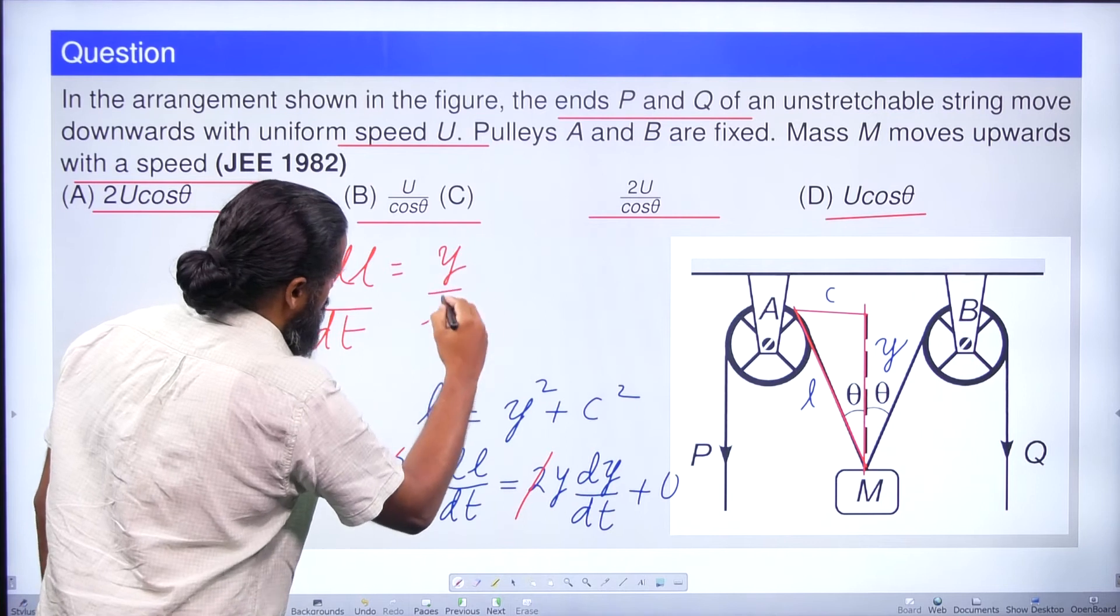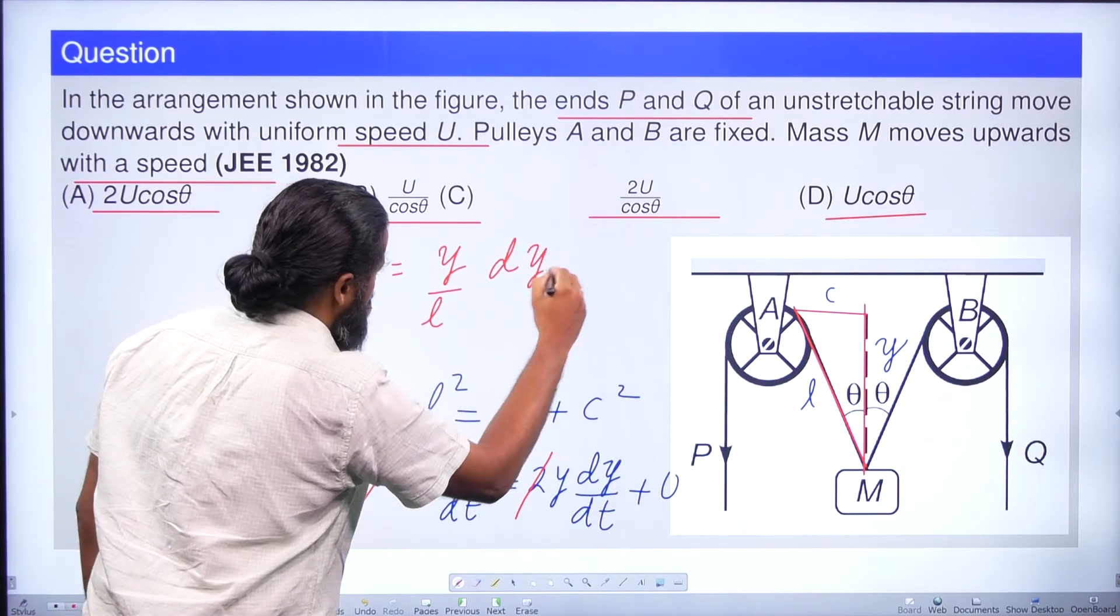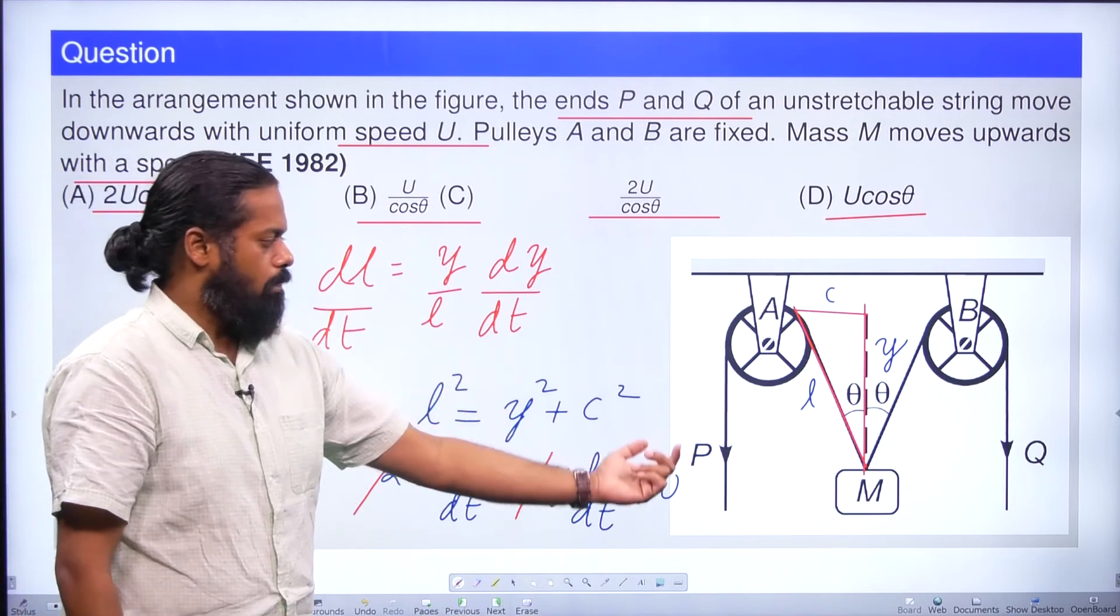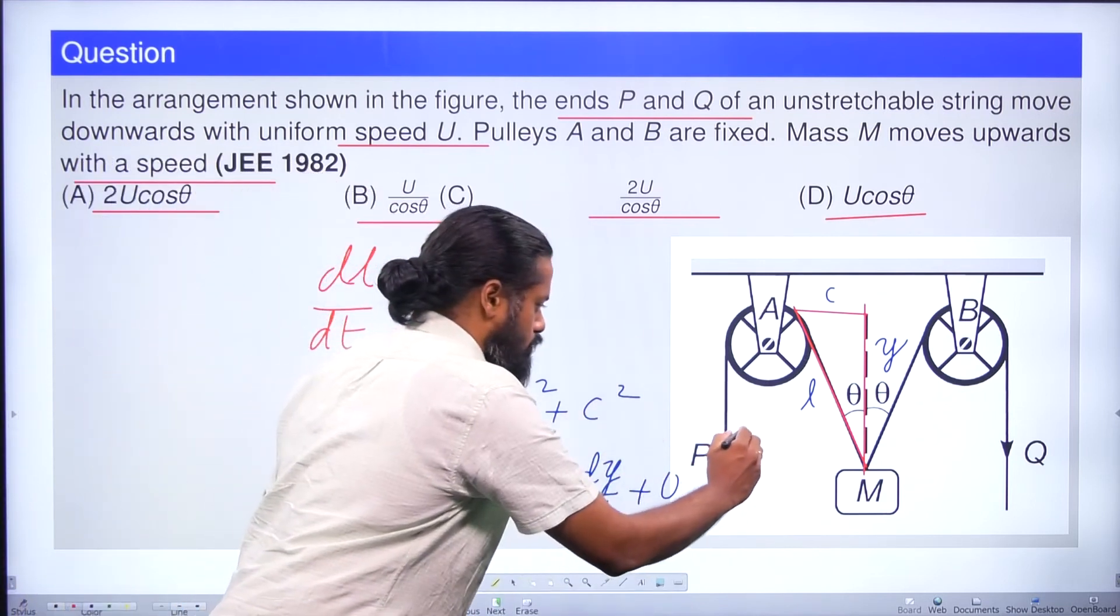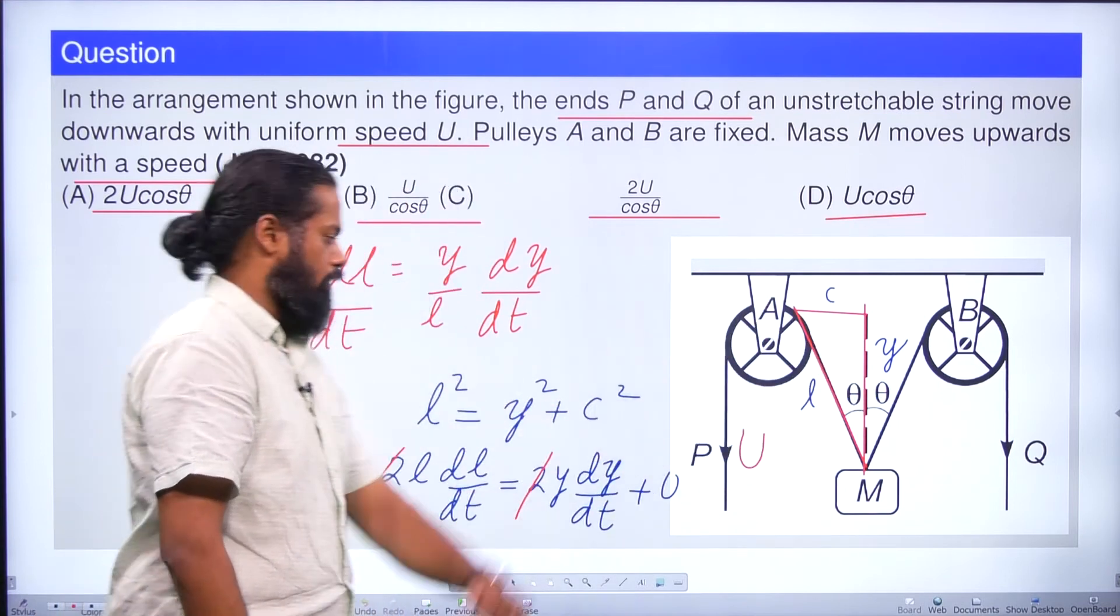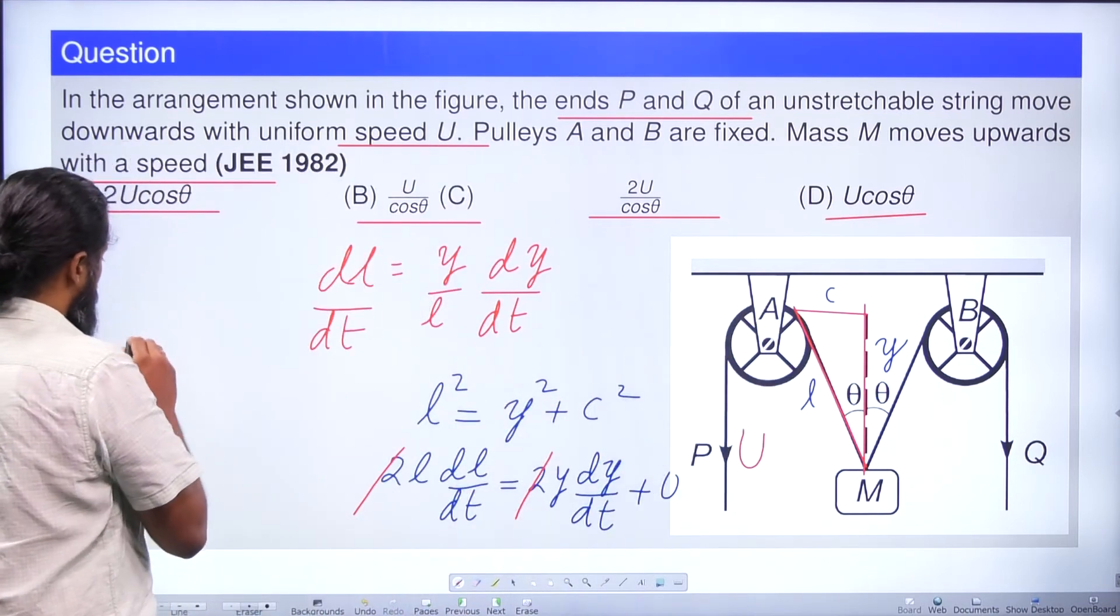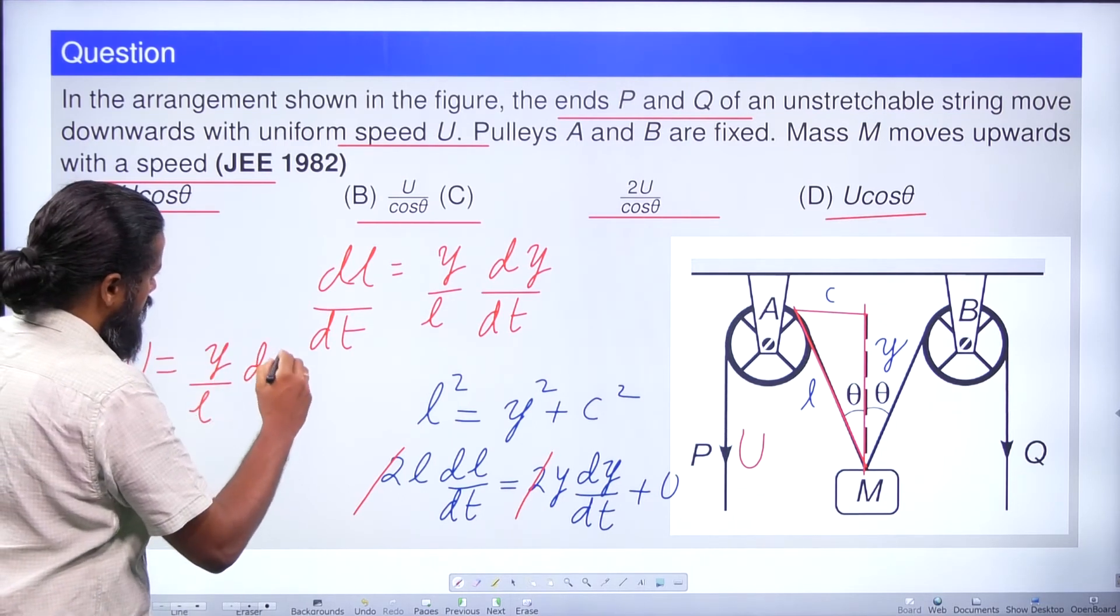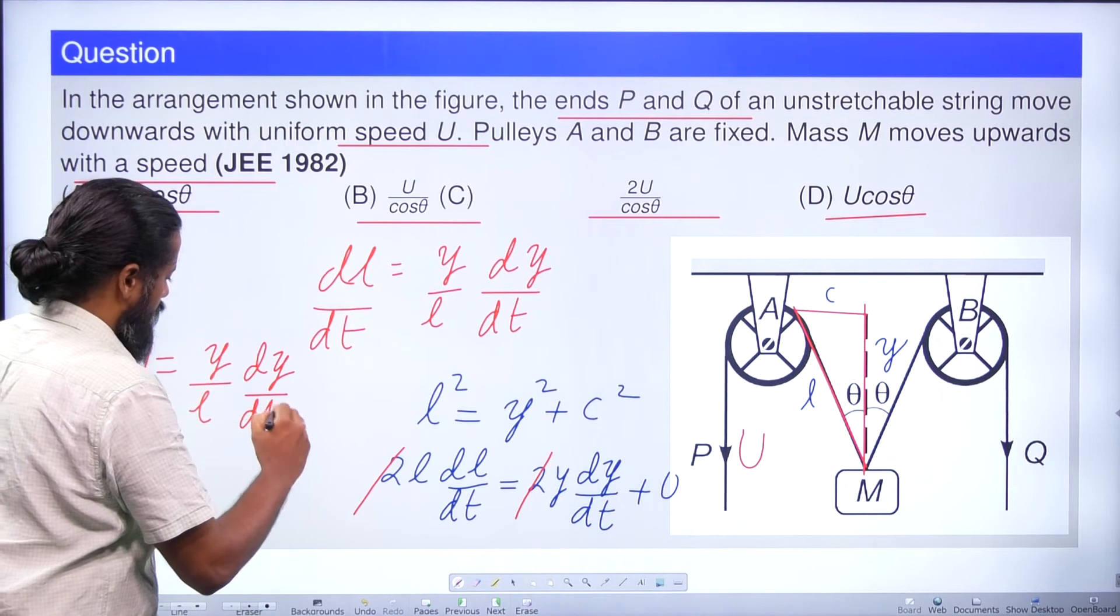See, what is dl/dt? dl/dt is nothing but the velocity at which we are pulling U, the velocity at which we are pulling P and Q in the downward direction. So this is U. U = (y/l) × dy/dt.